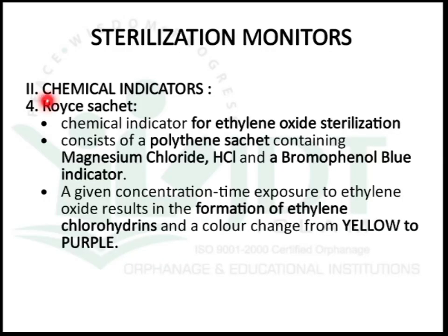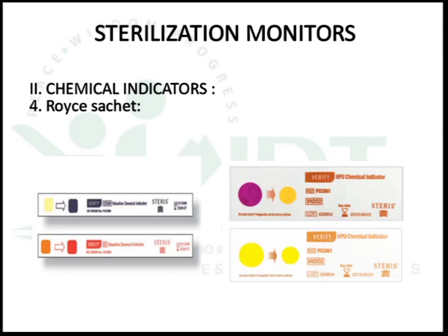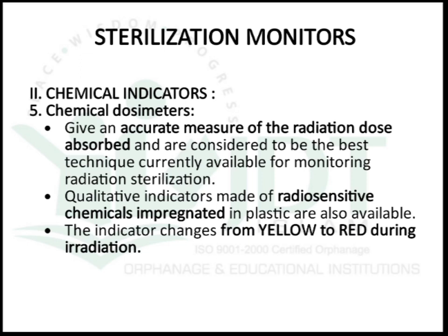Rosy sachets are chemical indicators used for ethylene oxide sterilization. They consist of a polyethylene sachet containing magnesium chloride, HCl, and bromophenol blue indicator. A given concentration and time of exposure to ethylene oxide results in the formation of ethylene chlorohydrin, which changes the color from yellow to purple.